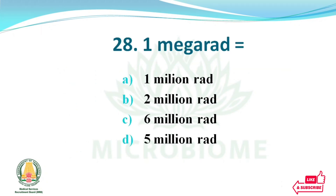One megarad is equal to — options: one million rad, two million rad, six million rad, five million rad. The right answer: option A, one million rad.